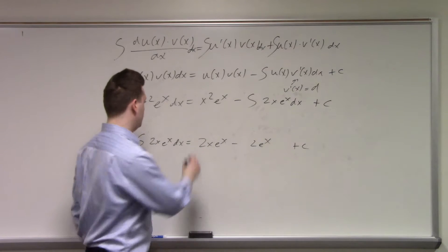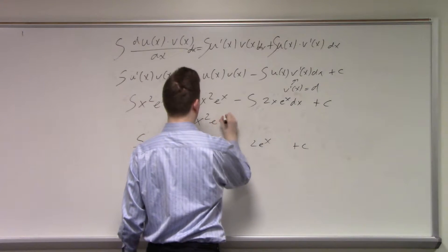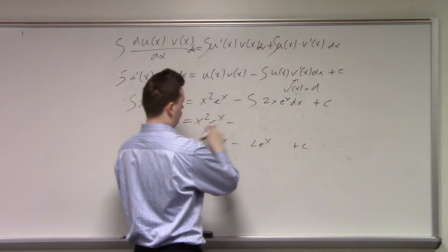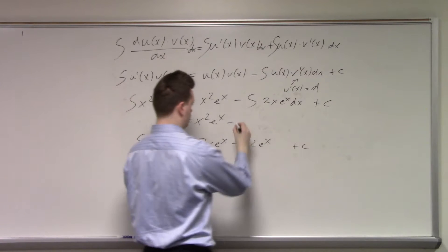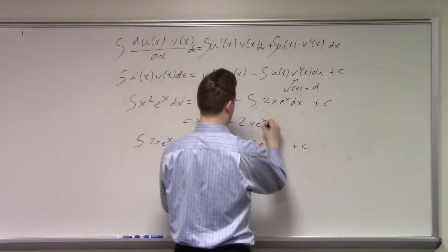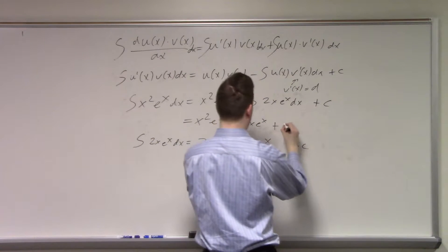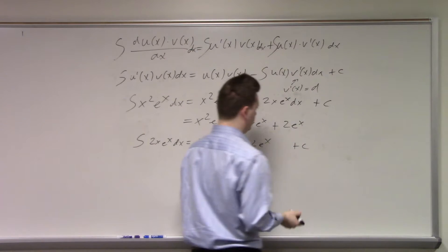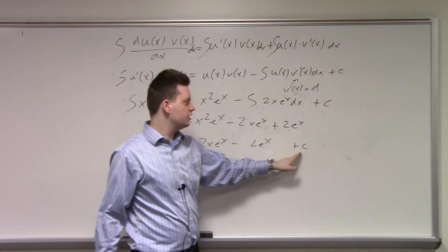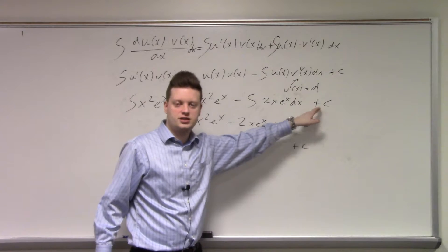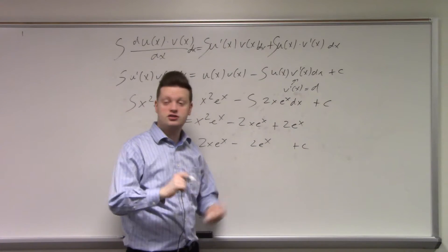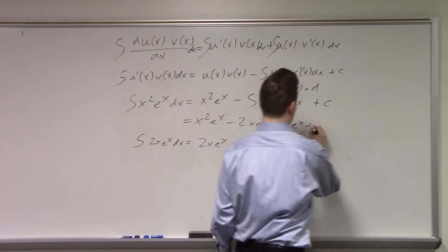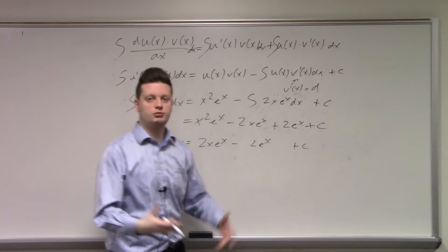So we can replace it up here. Now minus this expression, which is this, so we get minus 2x e^x. This becomes plus 2 e^x plus a constant. But we already have a constant. Adding and subtracting constants from each other leaves a constant, plus some constant.